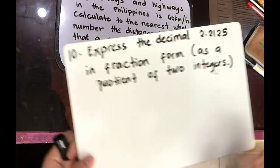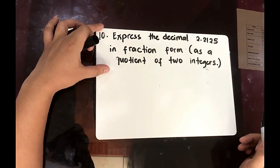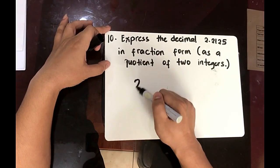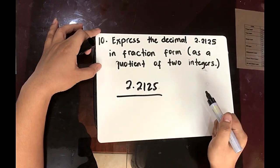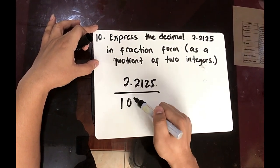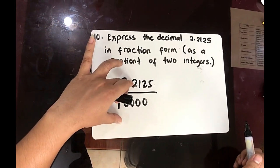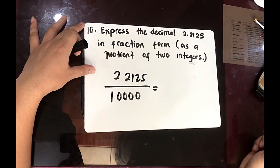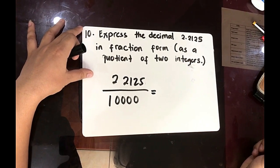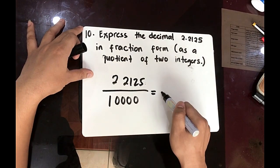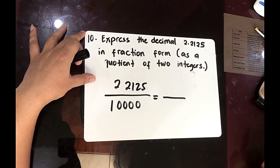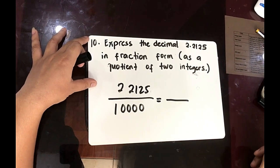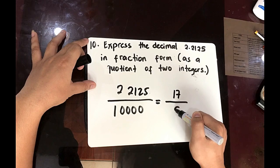And last one, number 10. Express the decimal 2.2125 in fraction form as a quotient of two integers. So 2.2125 over, so we have four zeros. So let's remove the decimal. Reduce in lowest term. That is divisible by 5. So if this is divisible by 5, so you can reduce that and the answer will be 17 over 8. This is the final answer.